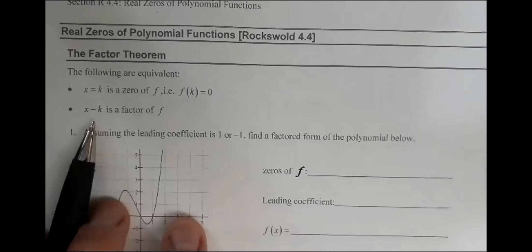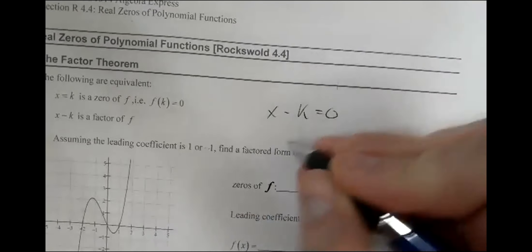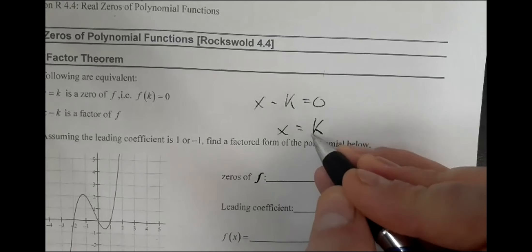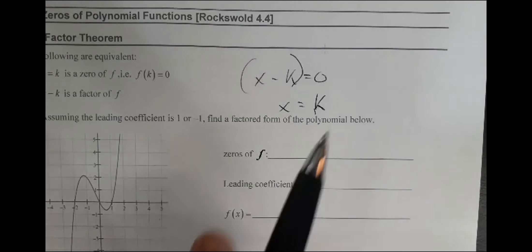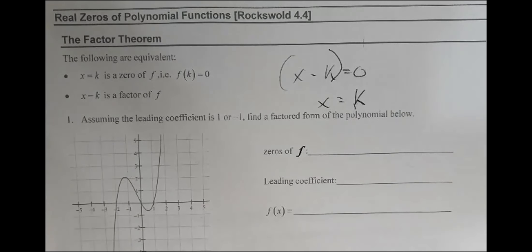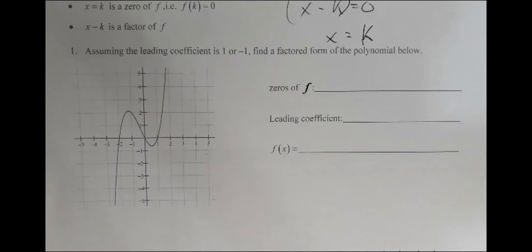So if we get a factor of x minus k, that's where they're getting that x equals k is the zero. So my factor looks like x minus the zero. The zero looks like just that number. So there is a difference — basically a negative sign happening here. Assuming the leading coefficient is one or minus one, find a factored form of the following polynomial.